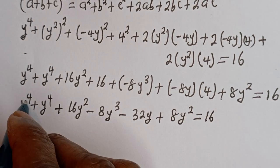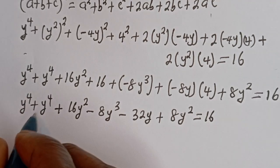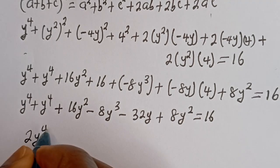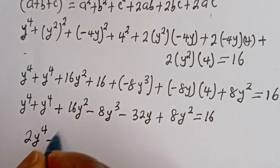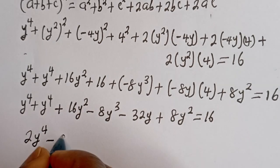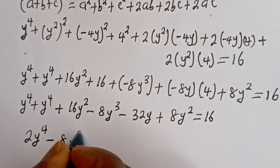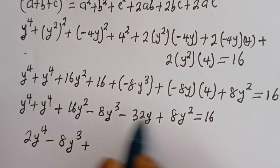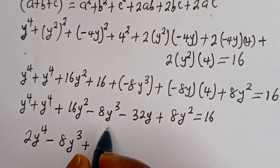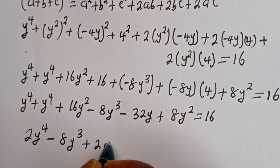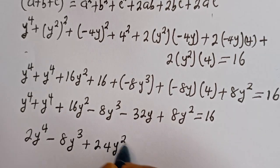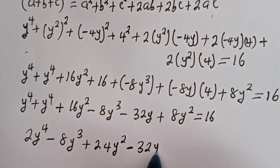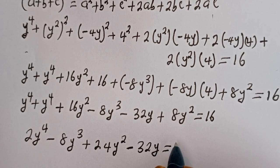This can be written as: 2y to the power of 4 minus 8y to the power of 3, plus 16y squared plus 8y squared — that is 24y squared — minus 32y equal to 16 plus 16.